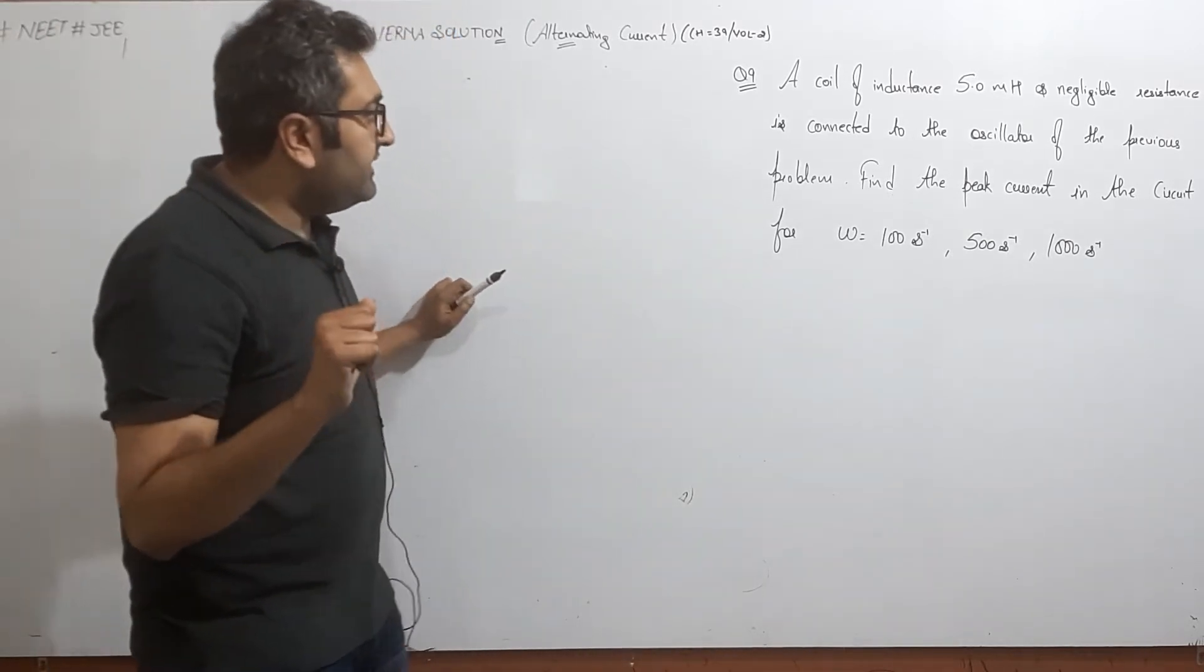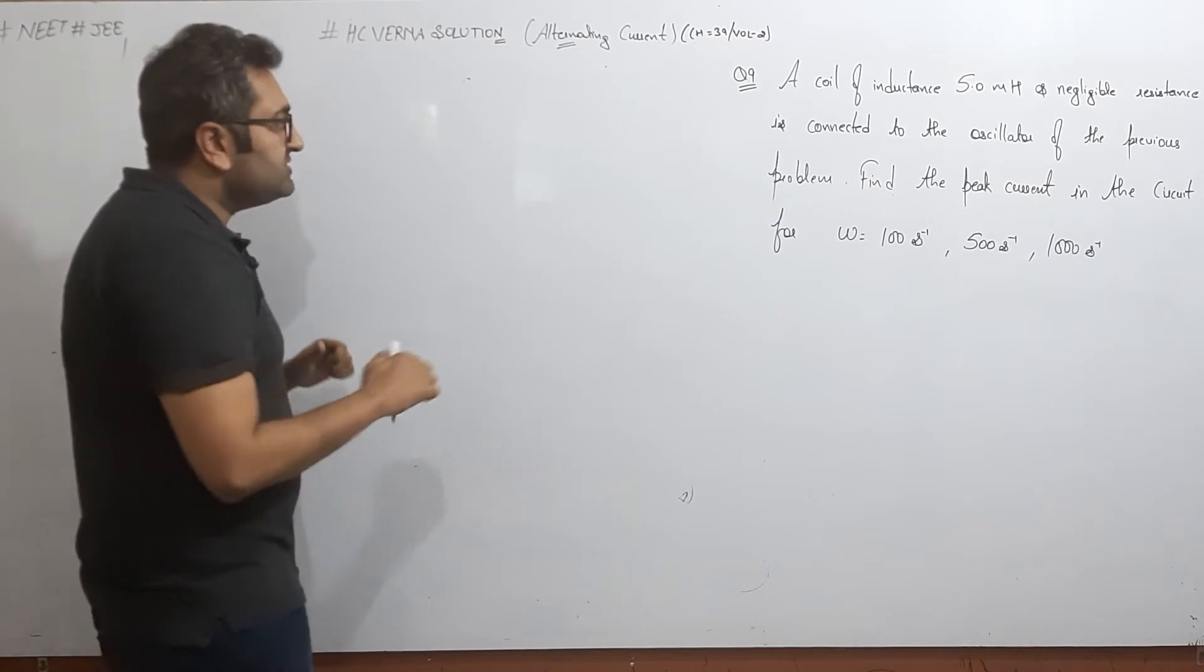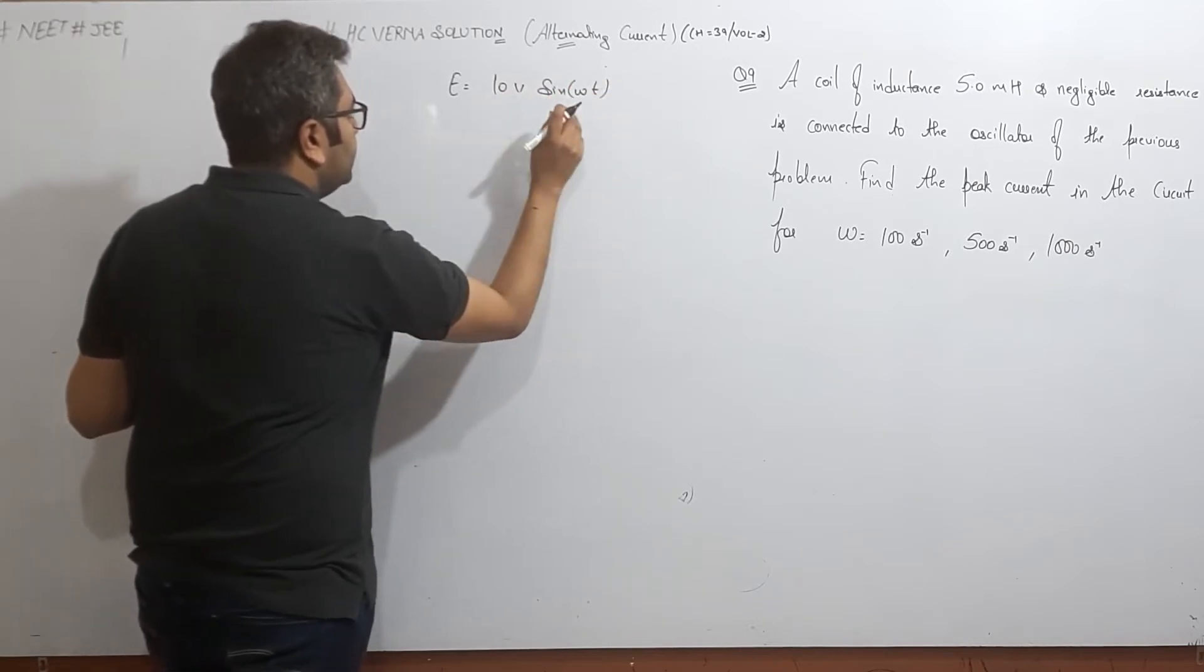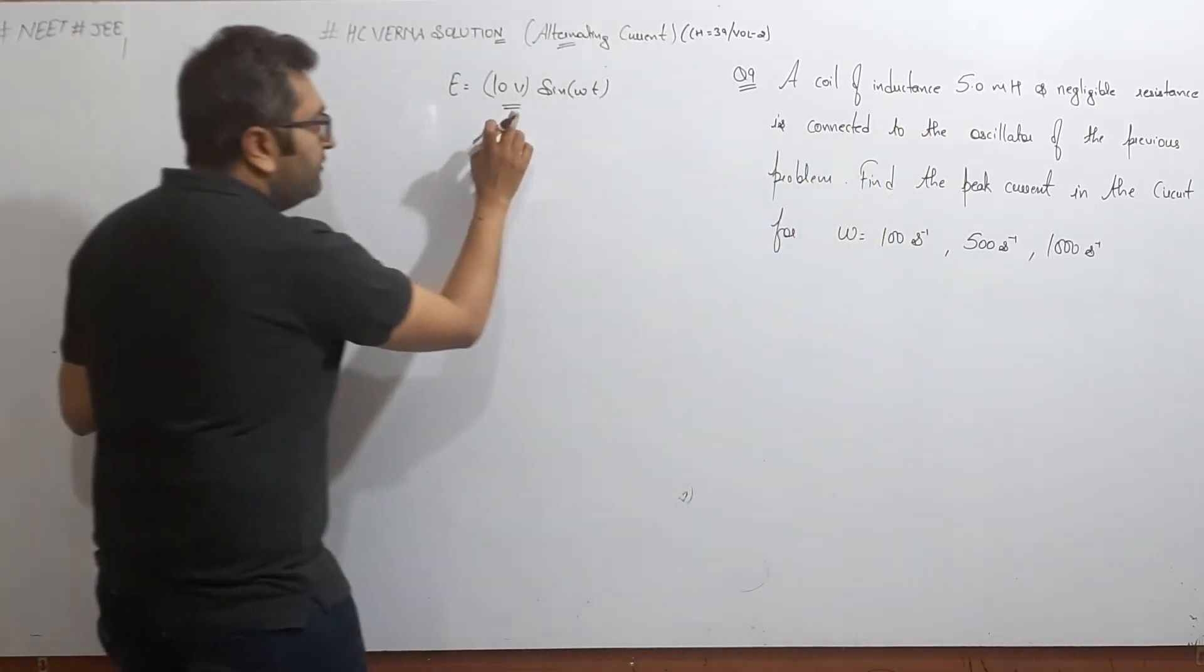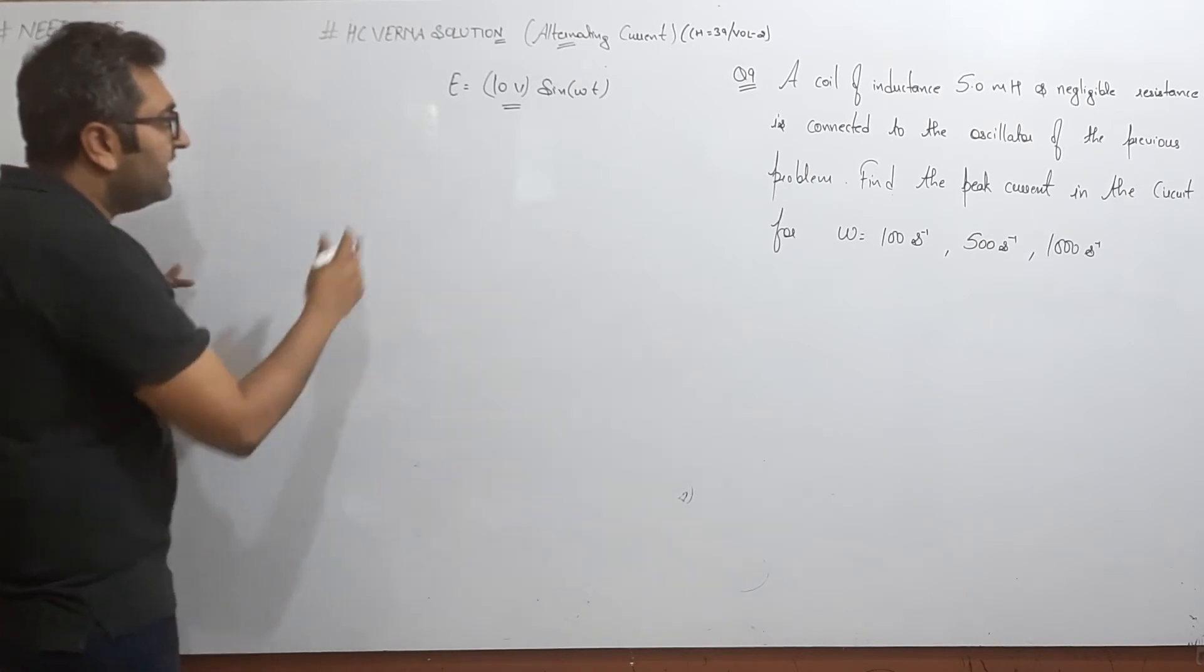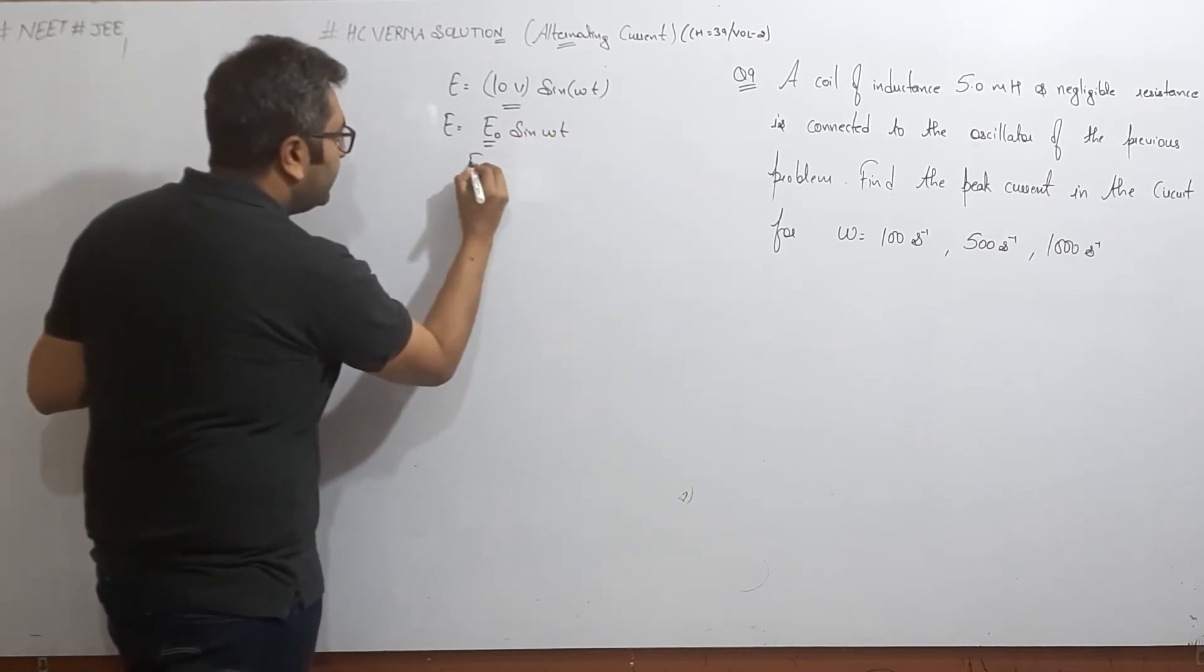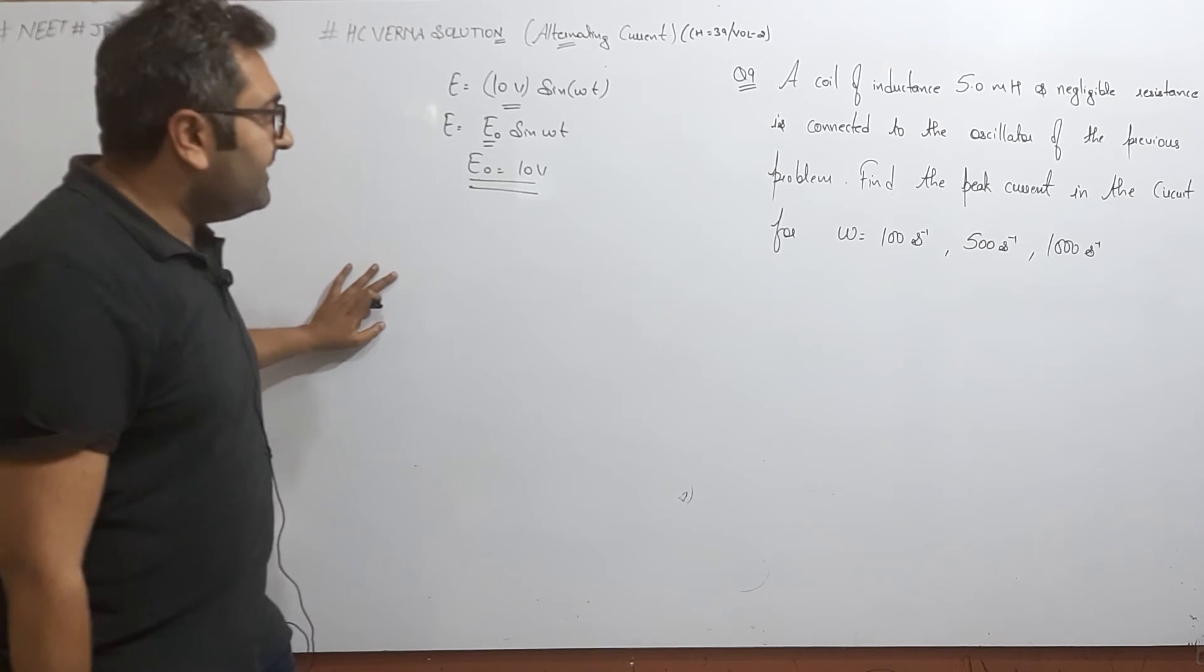Hello guys, welcome again. I'm your mentor on Unacademy. Hope you're doing well. Question number nine is connected to the last question. In the last question, it was given that e is equal to 10 volt sine omega t. The oscillator was the same one, and its output voltage was that. We consider the oscillator as an AC source, the same as we discussed in the last question. Comparing it, e is equal to e not sine omega t, e not ko compare karne pe, that will be 10 volt from the last question.